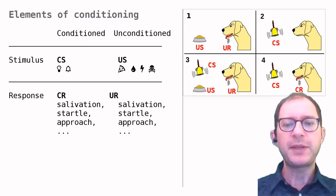This is the same image from before, with the new terms added. The bowl of food was the US, drooling in response to food was the UR, the sound was the CS, and drooling in response to the sound was the CR.